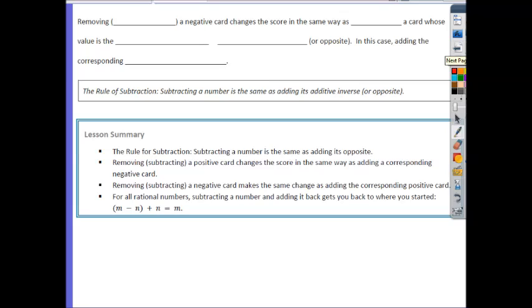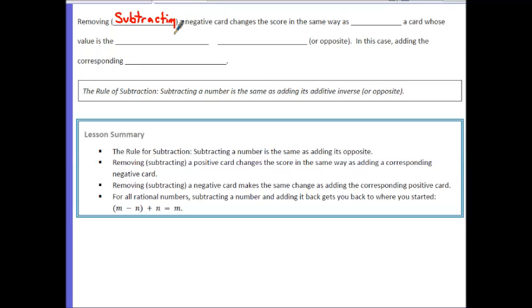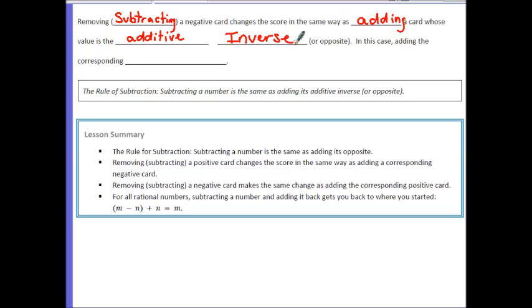Our conclusion: removing or subtracting a negative card changes the score in the same way as adding a card whose value is the additive inverse, or opposite. In this case, adding the corresponding positive.